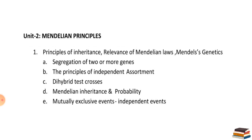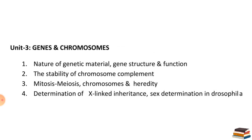Unit 2 covers Mendel's laws: segregation, the law of independent assortment, dihybrid cross, and monohybrid cross — all Mendelian principles studied in detail.